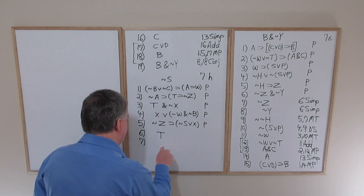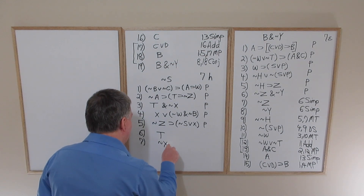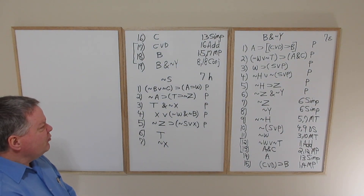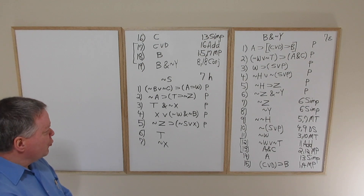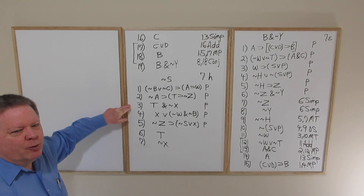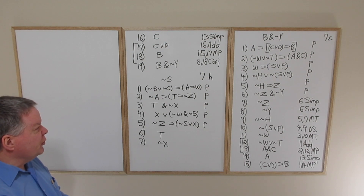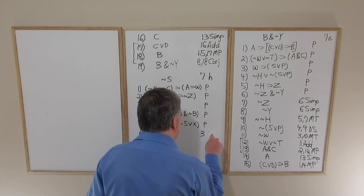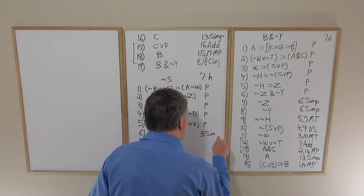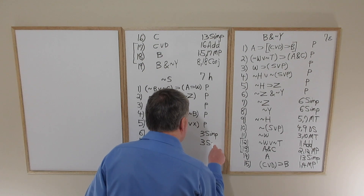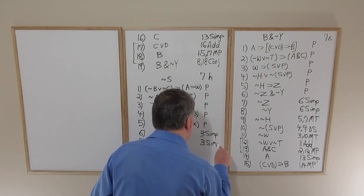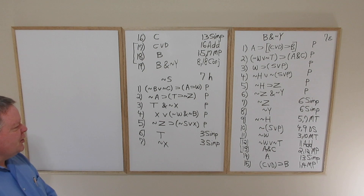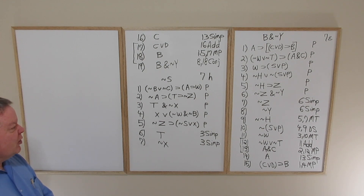Line three gives us T and tilde X. At this point it may not be crystal clear whether we're going to use both of those. Remember though, it's not wrong to do two simplifications in a row, so we'll do three simp, three simp. Those double simplifications will hopefully open up the opportunity to employ one of the rules you set up for.